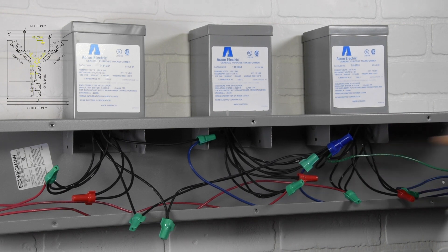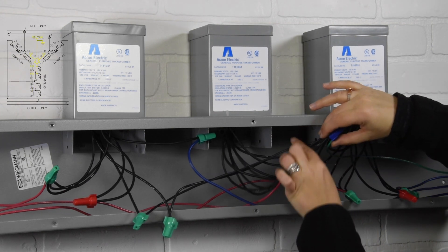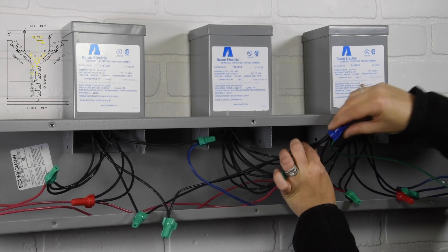Seventh connection: the neutral grounded wire to wires H2 and H4 in transformers 1, 2 and 3.